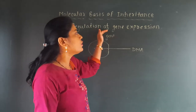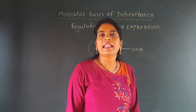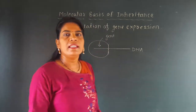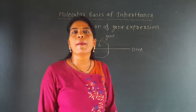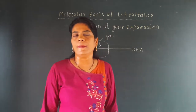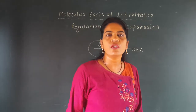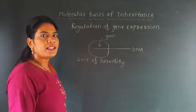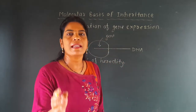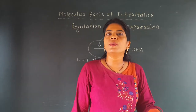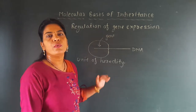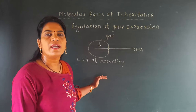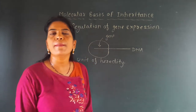So here we are going to discuss the regulation of gene expression — how this gene gets expressed and functions in our cell, which is called gene expression. Now we will discuss the functions of the gene. One important function of the gene is that it is a unit of heredity. Genes are transferred from parent to their offspring, which is why children look somewhat similar to their parents. That is called the unit of heredity.